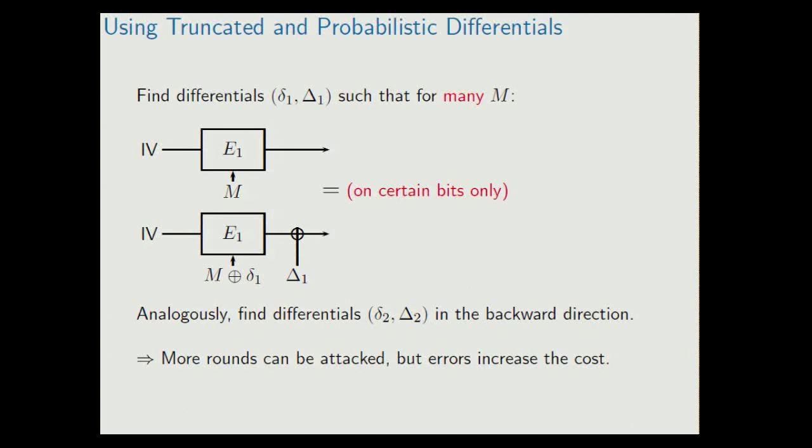This introduces errors, two types of errors. We can miss actual pre-images that must be compensated by testing more messages. And we can have false positives, that means we have to retest our positives. And both things increase complexity. And you have to trade these two errors to find optimal attack parameters.